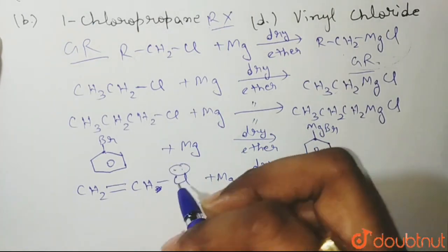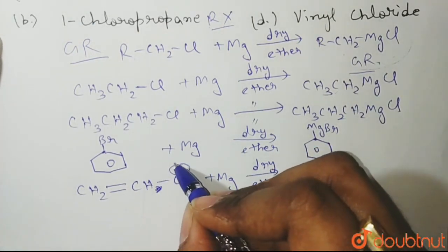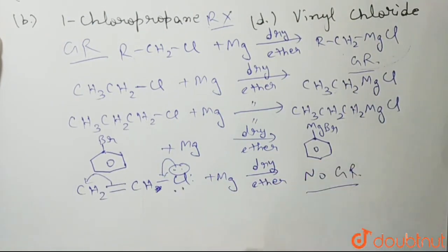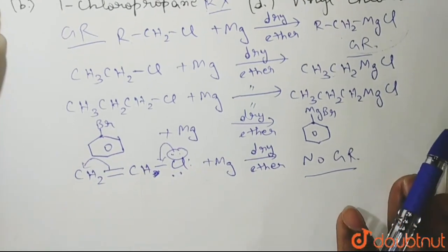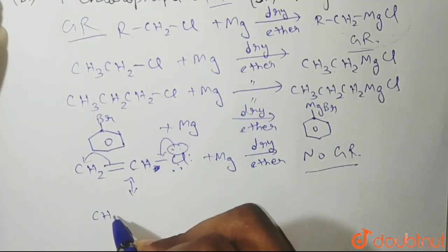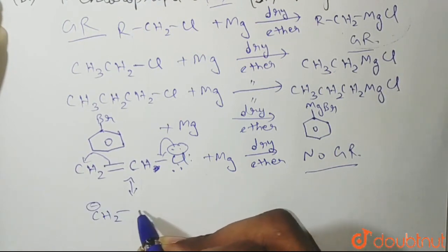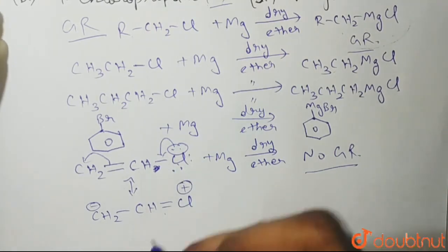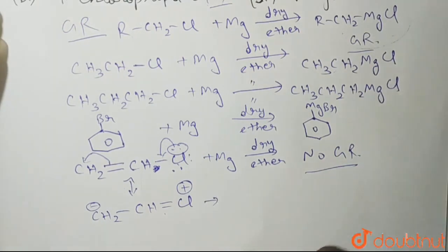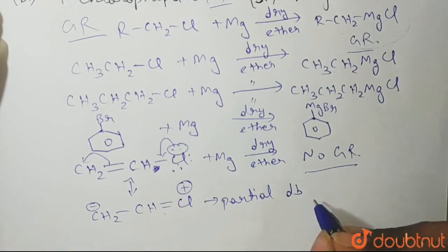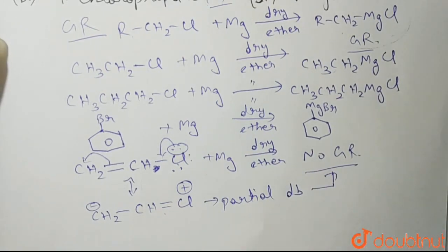Because see, here this Cl is participating in the resonance and giving us this kind of a resonating structure. We know that Cl has three lone pairs of electrons. It is participating in resonance and giving us this kind of a structure where this carbon and this Cl has a partial double bond character: CH2 negative, single bond, CH double bond Cl positive. So here this has a partial double bond character, and due to this partial double bond character, it is not able to form Grignard reagent.